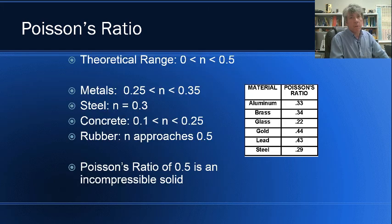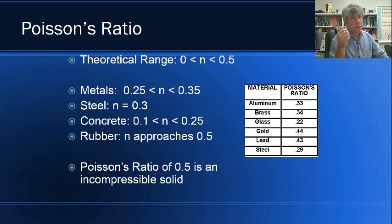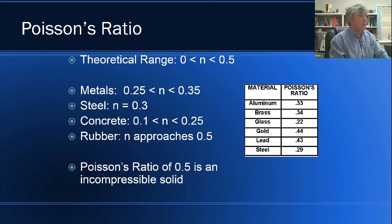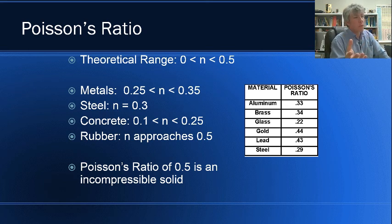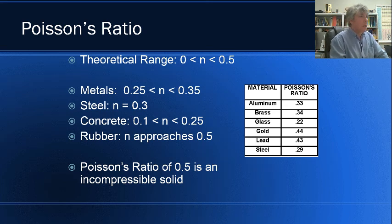Poisson's ratio has a theoretical range from zero to one-half. The symbol is the Greek lowercase nu — I apologize, the slides show N instead of nu, and I'll try to fix that. Metals typically exhibit Poisson's ratios from about 0.25 to 0.35; steel is about 0.3. Concrete is anywhere from about 0.1 to 0.25. Rubber approaches the theoretical maximum of 0.5, which represents an incompressible solid — one that doesn't change volume as it strains. There's also a table with representative Poisson's ratio values for aluminum, steel, gold, brass, and other metals.